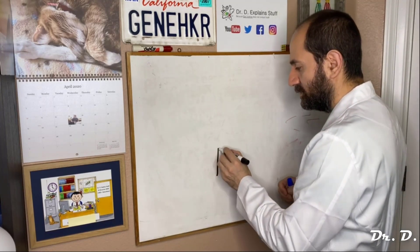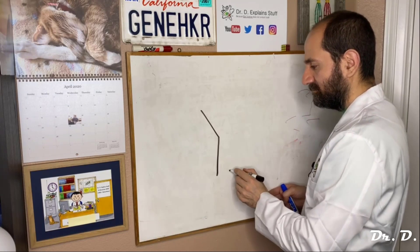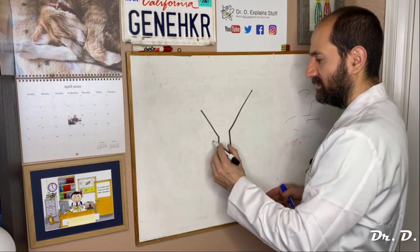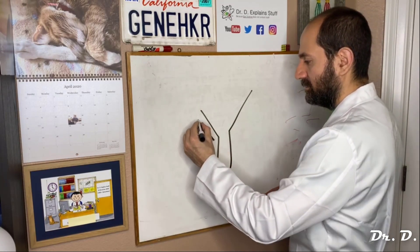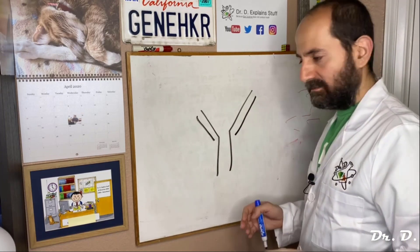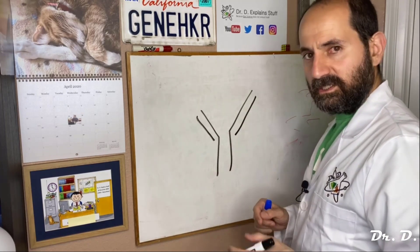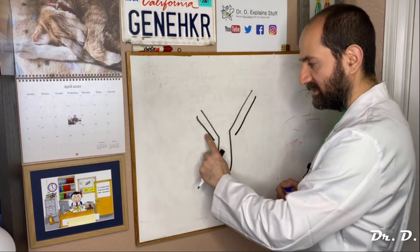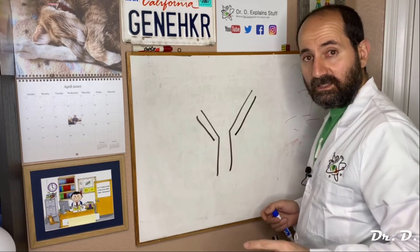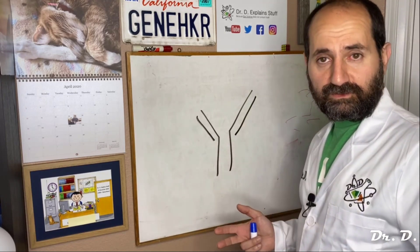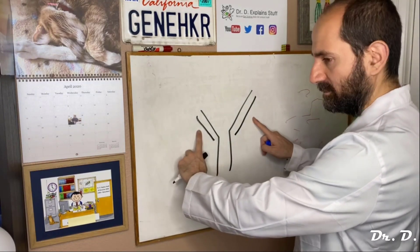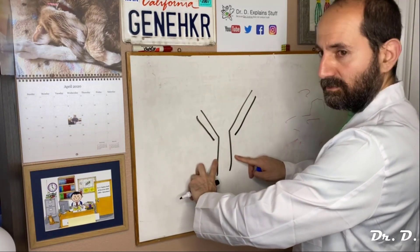You've got two identical heavy chains and two identical light chains — two heavy chains, two light chains. That's a protein, that's a protein, that's a protein, that's a protein: four proteins. These two are identical, those two are identical.